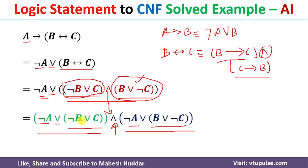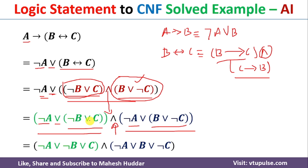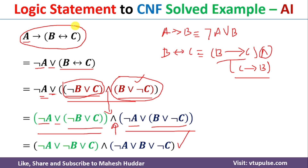Because there are only disjunctions within each clause, we can write the final CNF as: negation of A disjunction negation of B disjunction C, conjunction negation of A disjunction C disjunction B disjunction negation of C. This is the final CNF statement, which is equivalent to the original propositional logic statement.